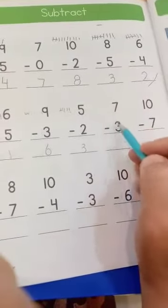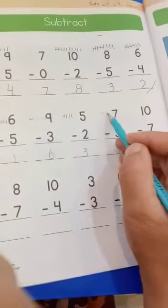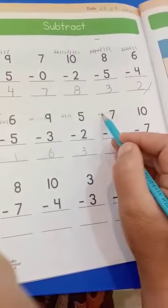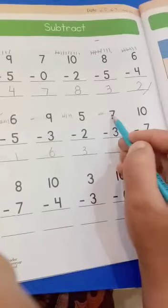7 minus 3: 1, 2, 3, 4, 5, 6, 7 minus 3. 1, 2, 3. How many left? 1, 2, 3, 4.